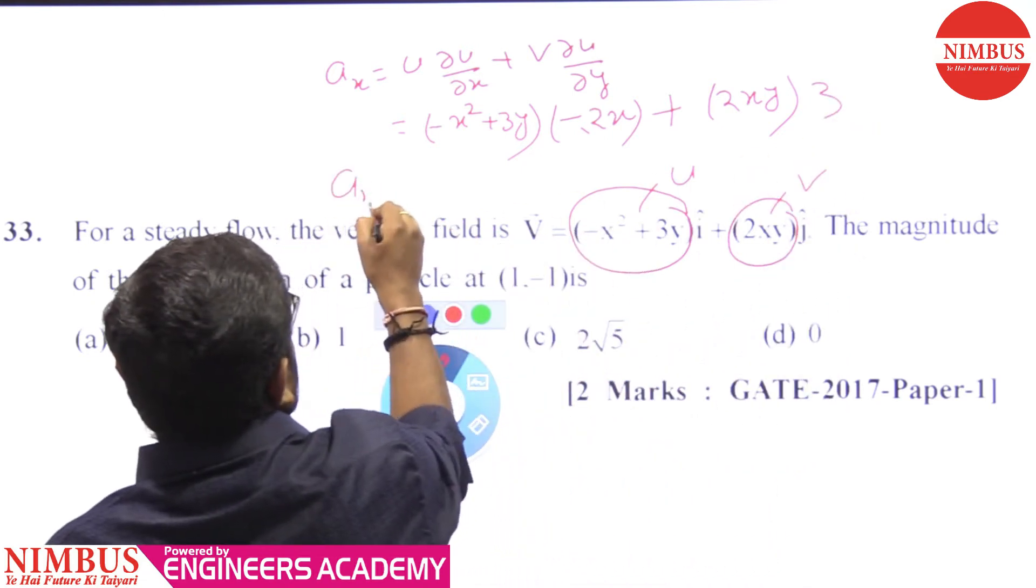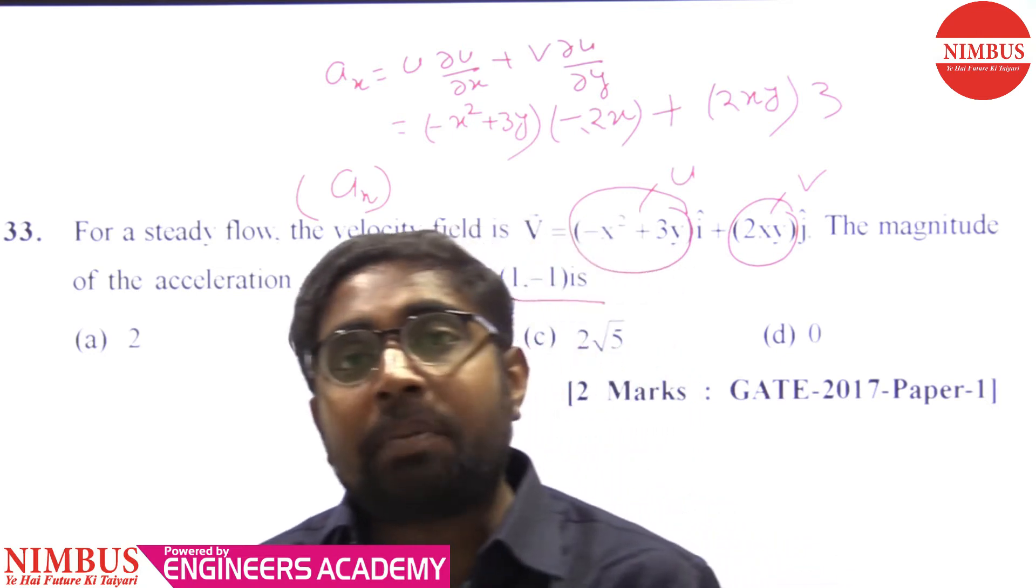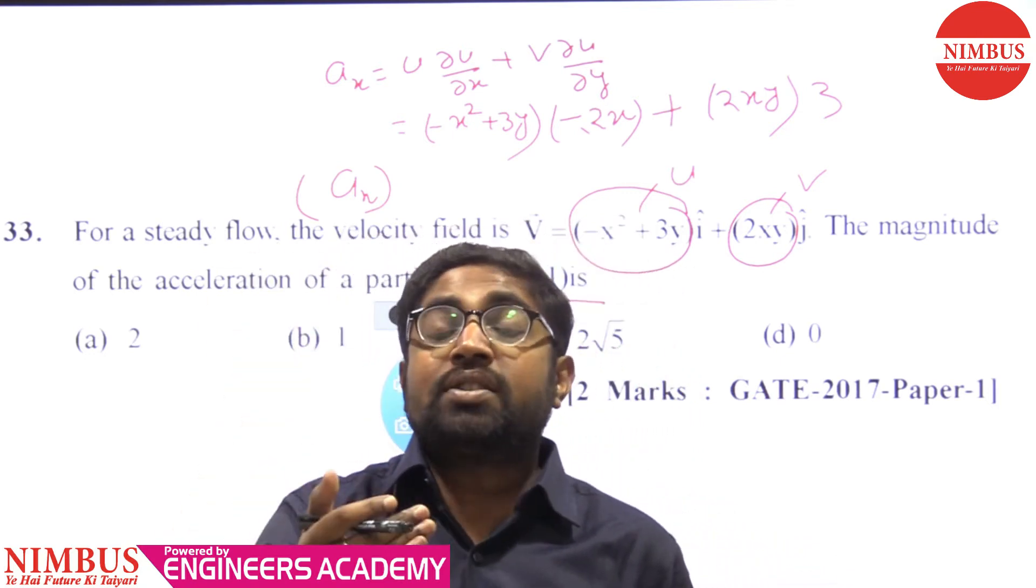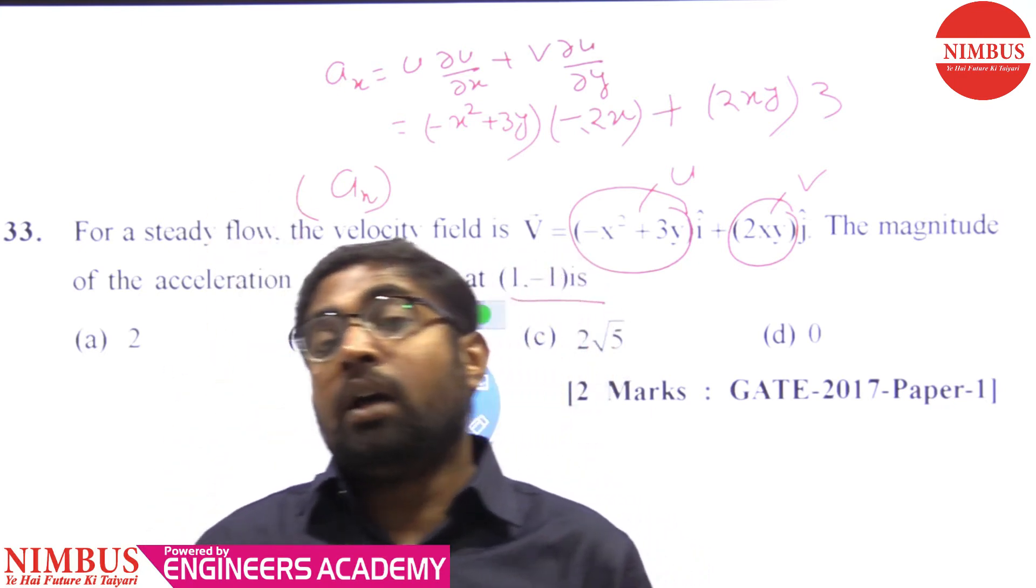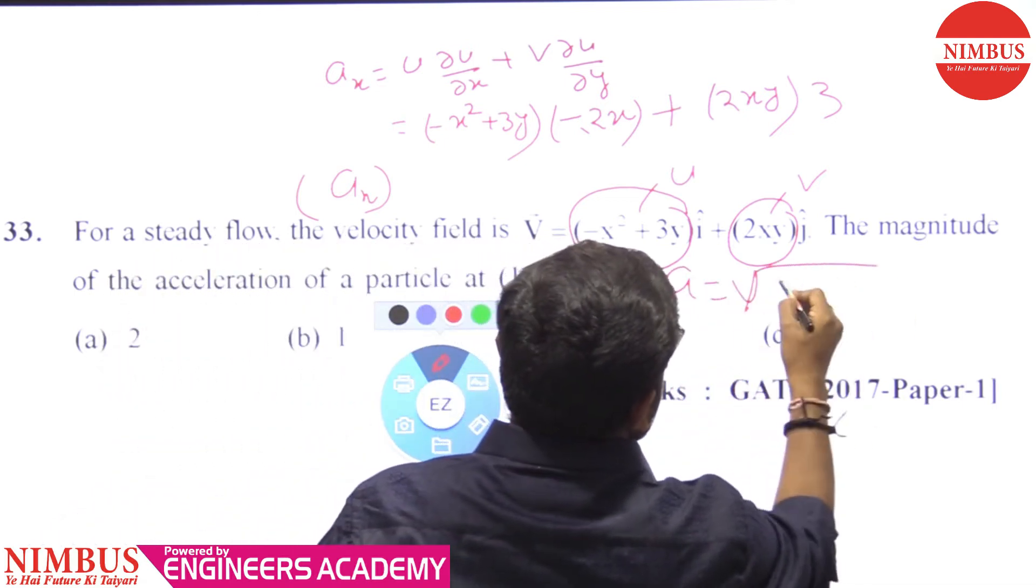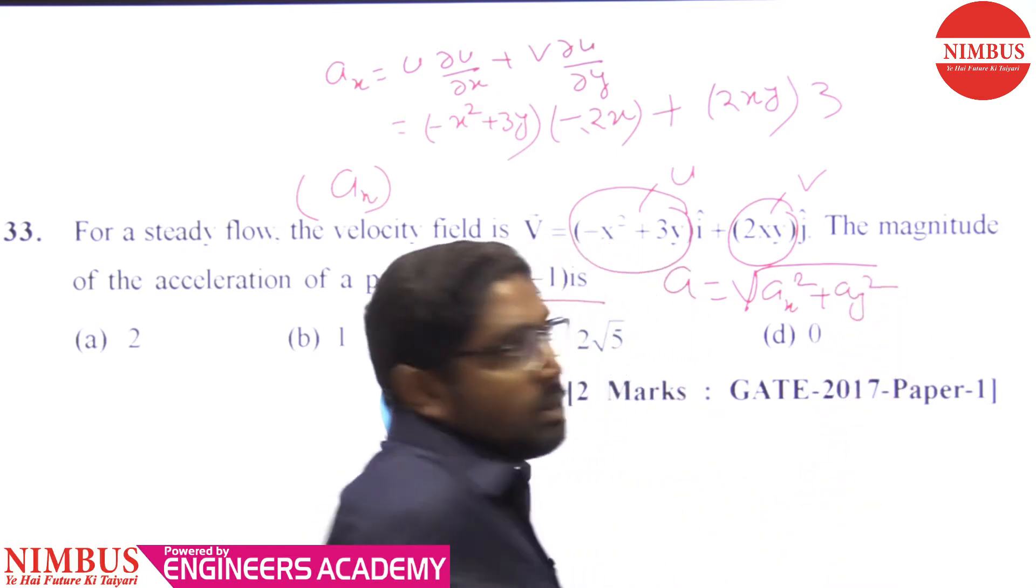Now we will take x's value as 1, -1 and we will take y's value. U·∂V/∂X plus V·∂V/∂Y and we will take the value (1,-1). We will take X² + Y².